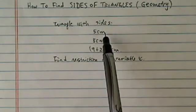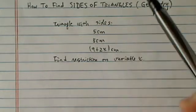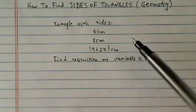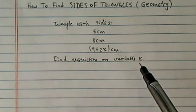We're given a triangle with sides 5 centimeters, 8 centimeters, and 9 plus 2x centimeters. We're asked to find the restriction on the variable x.